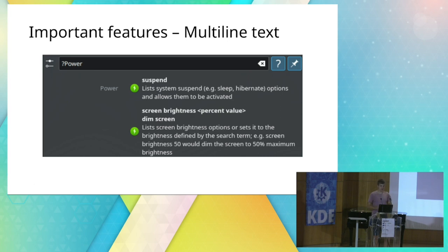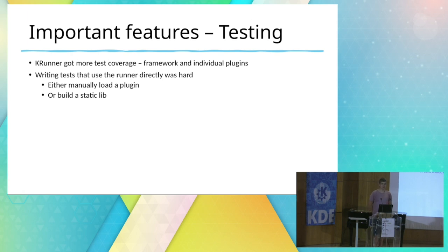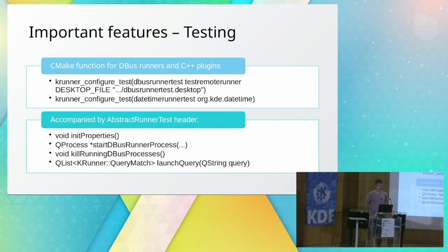Testing is quite important and aligns with the KDE goals. KRunner has gotten a lot more test coverage in the framework and individual plugins. Before my improvement, it was quite hard to write tests that actually used the plugin — you either had to load the plugin manually from the build directory or build the runner class in a static library, which is tedious and causes annoying CMake code. Luckily we have the `krunner_configure_test` CMake function to the rescue, which works for both DBus and C++ runners.